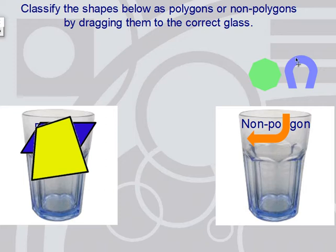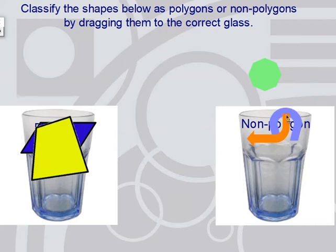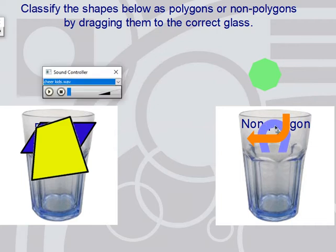Let's look at this shape. It's closed, but I don't see straight lines — I see curved lines. So this is not a polygon.